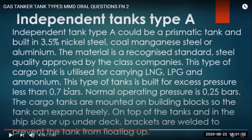Tanks are for excess pressure less than 0.7 bar - type A is not built very strong, mainly for refrigerated vessels. Normal operating pressure is less than 0.25 bar excess of atmospheric pressure. The cargo tanks are mounted on building blocks so the tank can expand freely. On the top of the tanks, on the ship side or under the deck, brackets are welded to prevent the tank from floating up - the skirt or brackets connected to and supporting the hull structure.